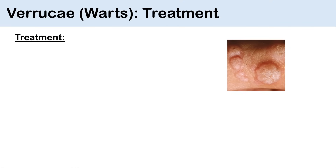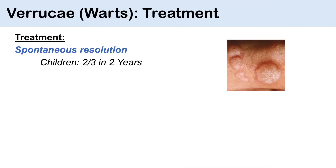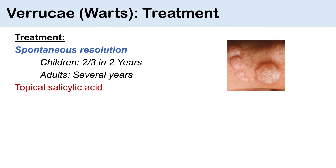Now that we know the different subtypes, how do we treat warts? Treatment can actually be conservative — many times warts will spontaneously resolve on their own. With children, two-thirds will have remission of the wart in about two years. Adults may take longer, depending on age and immune system function. If spontaneous resolution doesn't occur, you can use topical salicylic acid or cryotherapy. Cryotherapy is very common in a doctor's office — liquid nitrogen is used to essentially burn the warts.